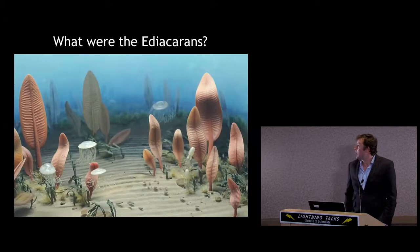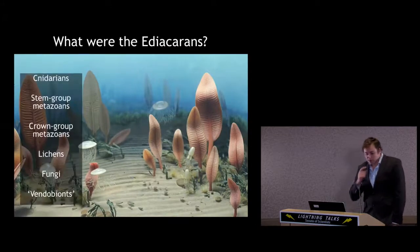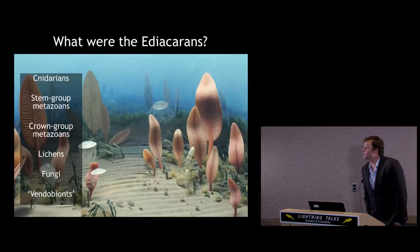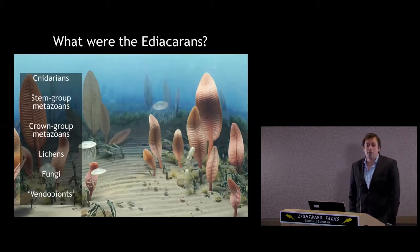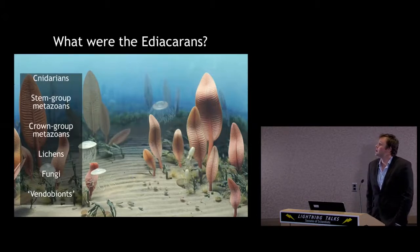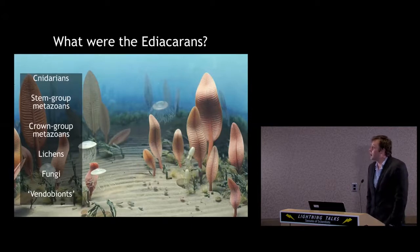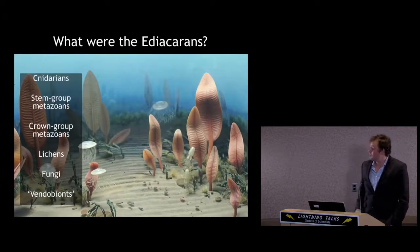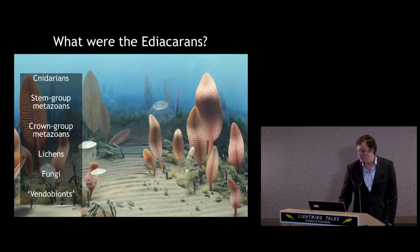So what were the Ediacarans? Well, at various points in their history they have been allied with the Cnidarians — so they were all jellyfish. At some stage we thought they were all lichens. Some still think they're all fungi. And they've also been called a failed experiment in the history of complex life, the Vendobionta.